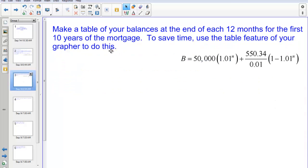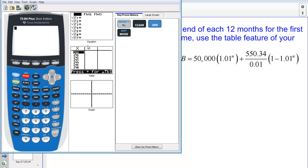People who buy houses usually get a loan to pay for most of the house and pay on the resulting mortgage each month. Suppose you get a $50,000 loan and pay it back at $550.34 per month with an annual interest rate of 12% per year, that's 1% per month. Your balance, B dollars, after N monthly payments is given by the algebraic equation given here. You can see it.